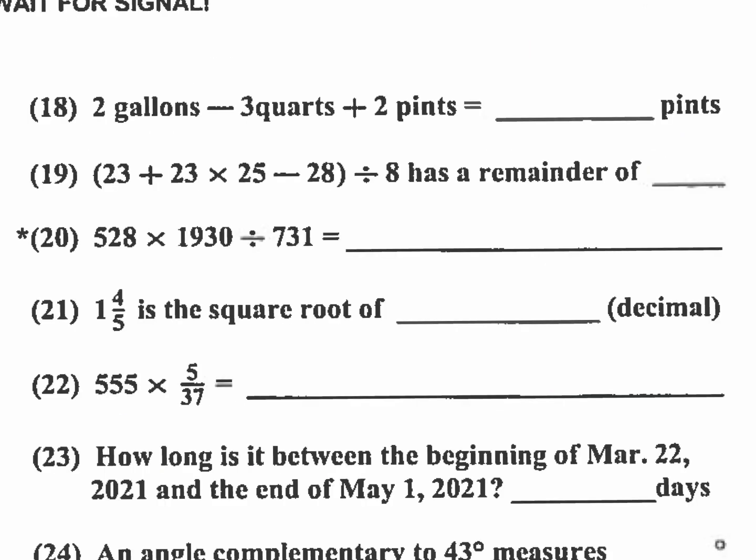For number 18, we have gallons minus quarts plus pints. And we want the answer in pints. So convert everything to pints. Now, in case you forgot, one gallon has eight pints and one quart has two pints. So I'm going to have 8 times 2. I have 16 pints here. And I have two pints for every quart. So minus 6 there plus 2. So 10 plus 2 is 12. So the answer for number 18 should be 12 pints.